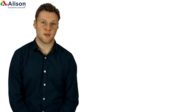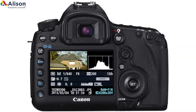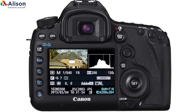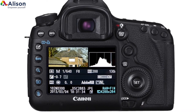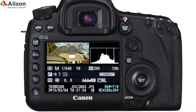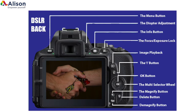Moving on, we have the info button. This is very handy when working on your DSLR, because when you press this button during image playback it can display metadata, a histogram, and some other important information about the photograph on our LCD screen.